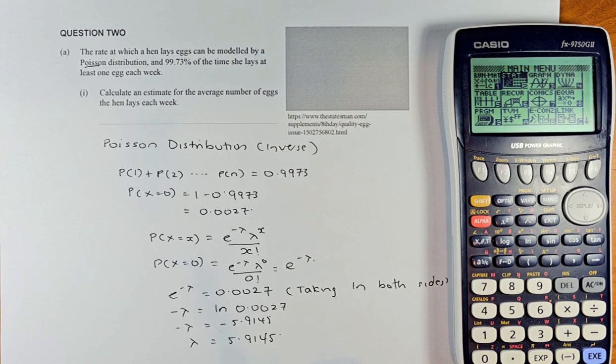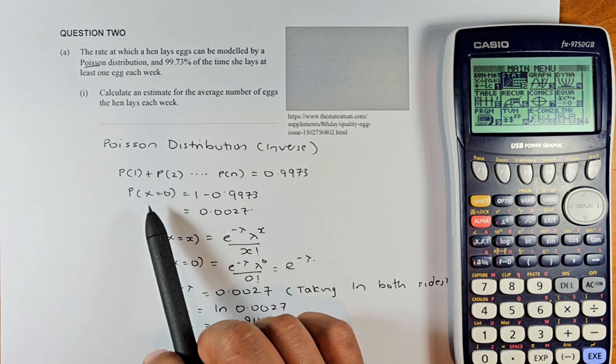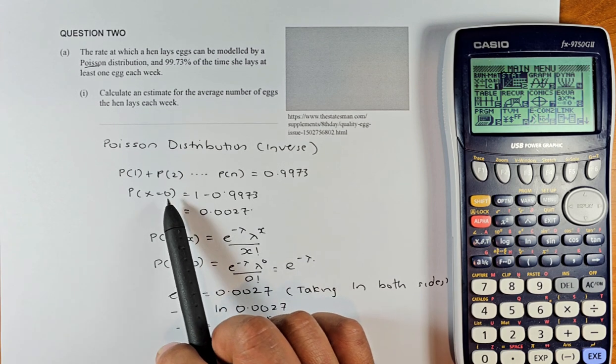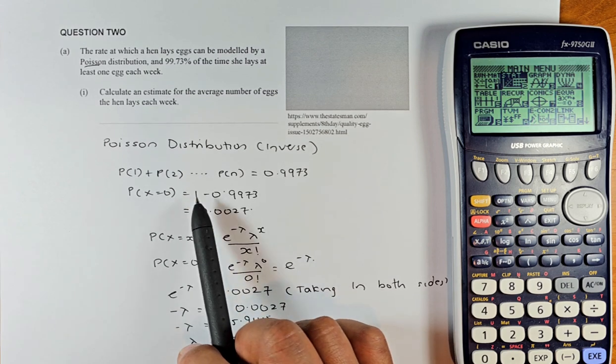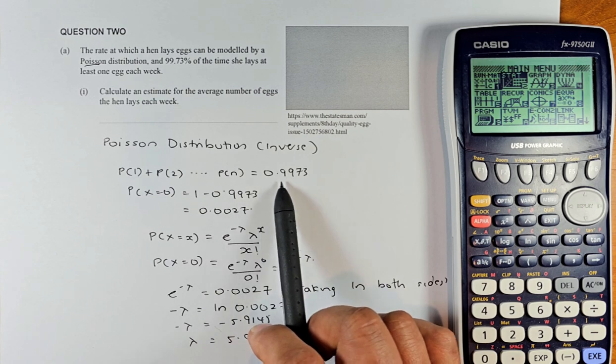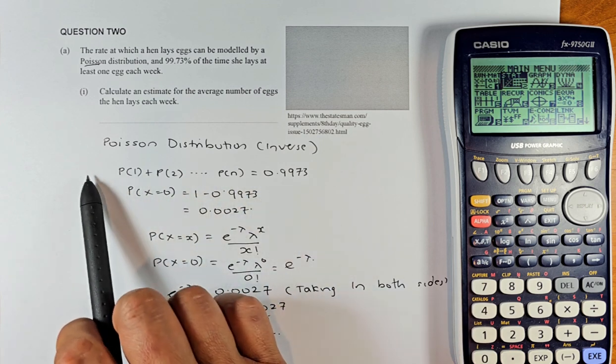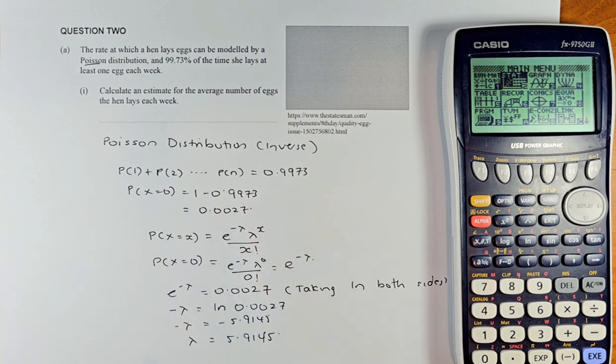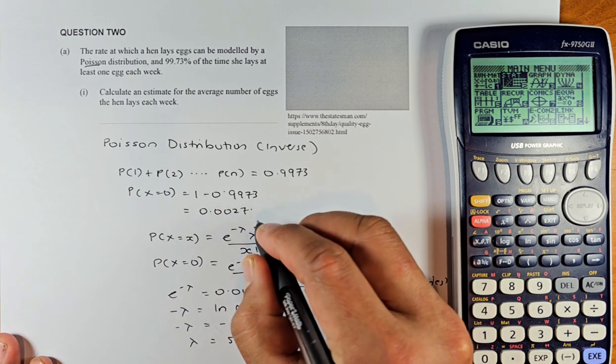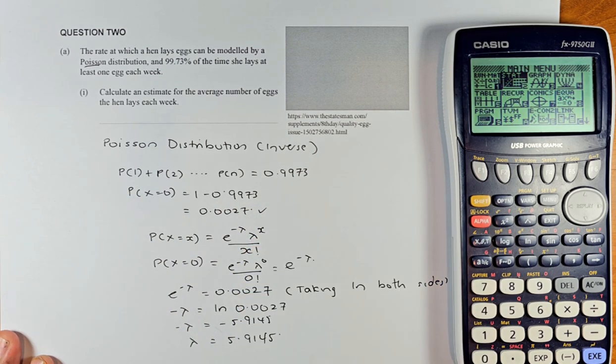So when you do inverse Poisson or when they ask you to calculate the mean, you need to know that you need to get X equal to 0. To get X equal to 0, you just take 1 minus this number here 0.9973 because 1 to N is 0.9973. So 0 is the remainder. So you take 1 minus 0.9973 and the answer is 0.0027.